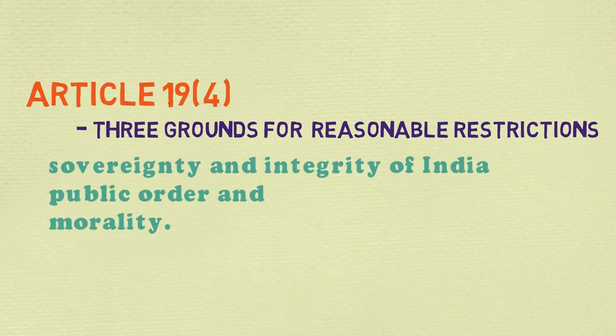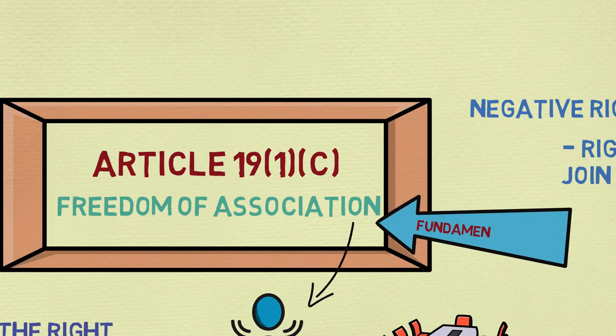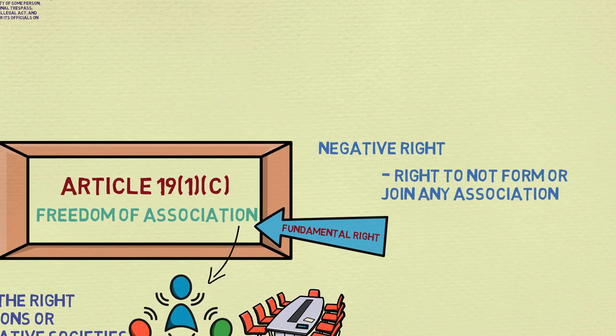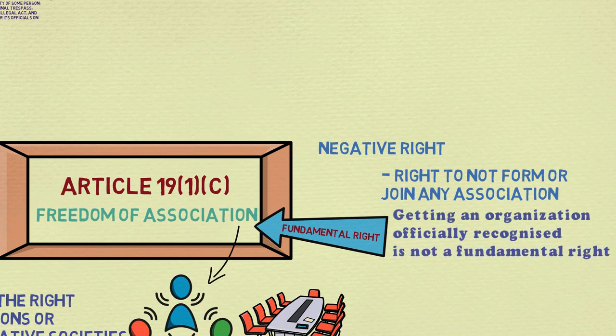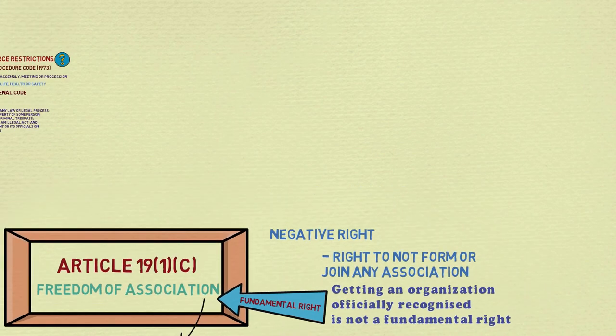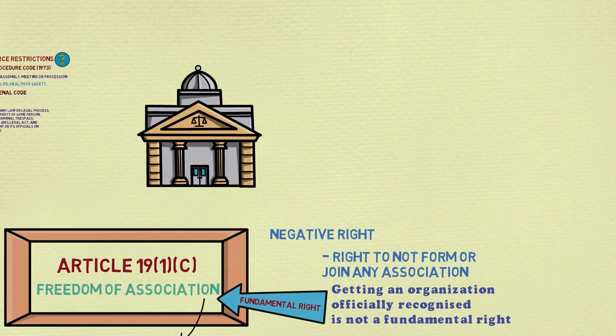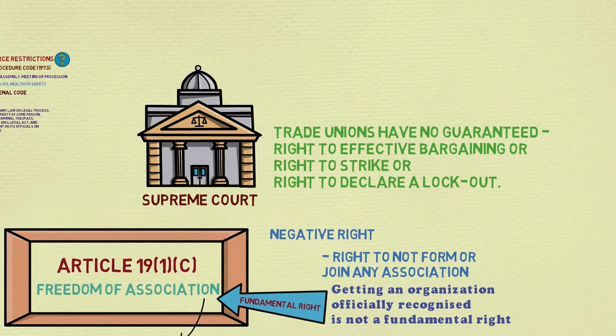Note that forming an association is a fundamental right, but getting such an organization officially recognized is not a fundamental right. The Supreme Court held that trade unions have no guaranteed right to effective bargaining, a right to strike, or a right to declare a lockout.